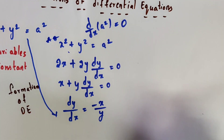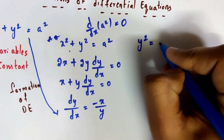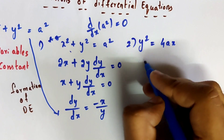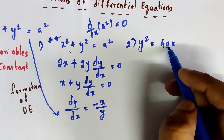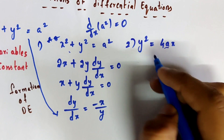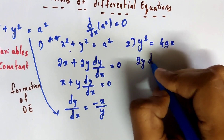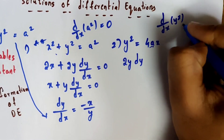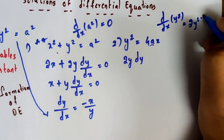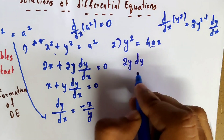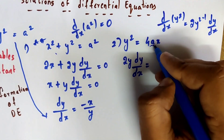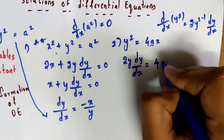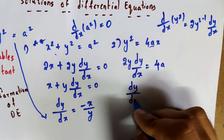Here I have a second example: y squared equals 4ax. Here there is only one constant 'a', so we need only one derivative with respect to x. Differentiating: 2y times dy/dx equals 4a, since the derivative of x is 1. So 4a equals 2y times dy/dx.